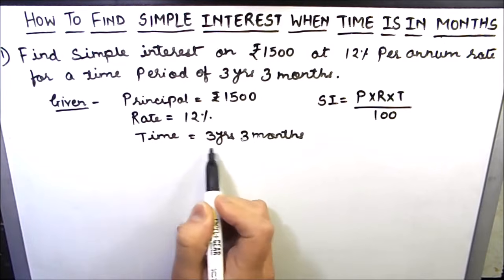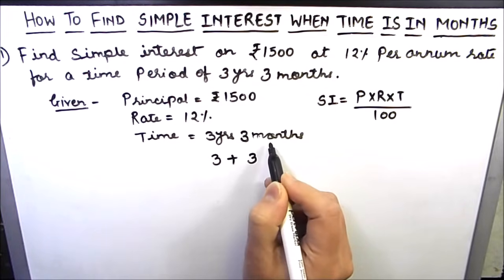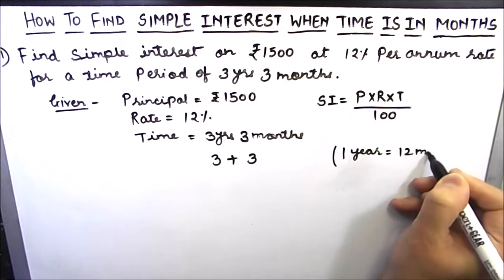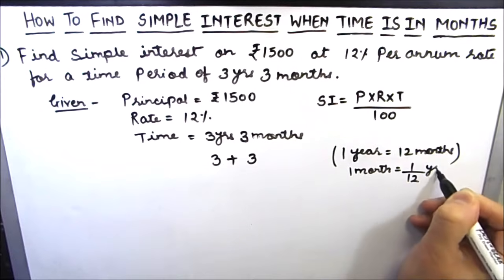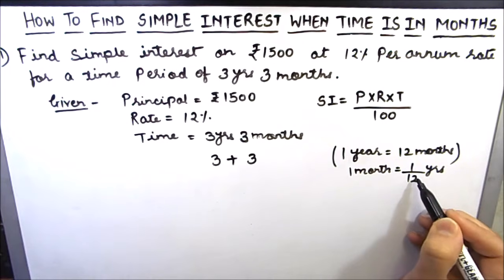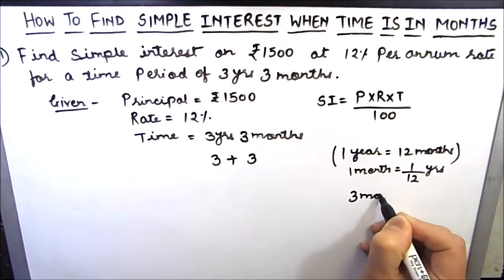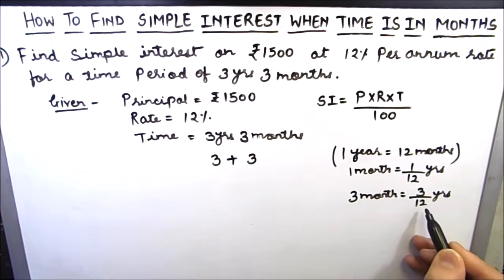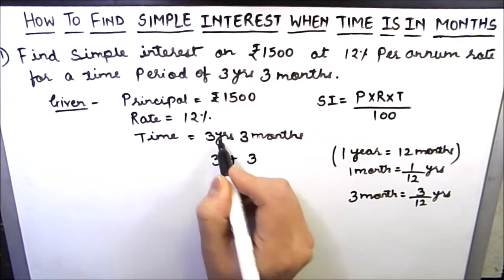Here we have time as 3 years 3 months, so we have 3 full years plus 3 months. We need to convert these months into years. We know that 1 year is 12 months, so 1 month will be equal to 1 divided by 12 years. If we write months in years we take 12 in the denominator. Similarly for 3 months we will have 3 by 12 years, and we add this to 3 to make 3 years 3 months into years.